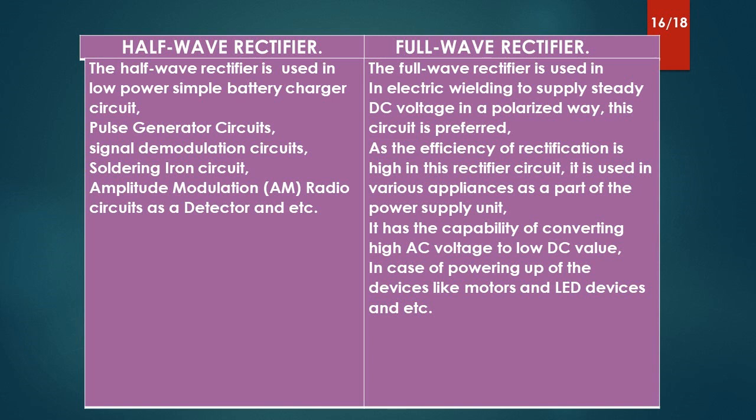The full-wave rectifier is used in electric welding to supply steady DC voltage in a polarized way. As the efficiency of rectification is high in the full-wave rectifier circuit, it is used in various appliances as part of the power supply unit. It has the capability of converting high AC voltage to low DC value, including powering devices like motors and LEDs.